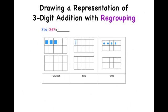Next, let's draw 267 using pink. 267 has two hundreds, six tens, and seven ones.